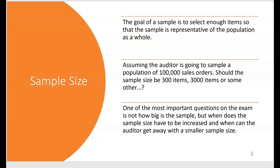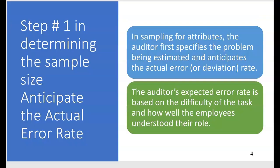The goal of a sample is to select enough items so that the sample is representative of the population as a whole. Assuming the auditor is going to sample a population of a hundred thousand sales orders, how big should the sample size be — 300 items, or do we have to look at 3,000 sales orders? One of the most important questions on the exam is not how big the sample is, but when does the sample size have to be increased and when can the auditor get away with a smaller sample size. Step one in determining sample size is to anticipate the actual error rate in the population.